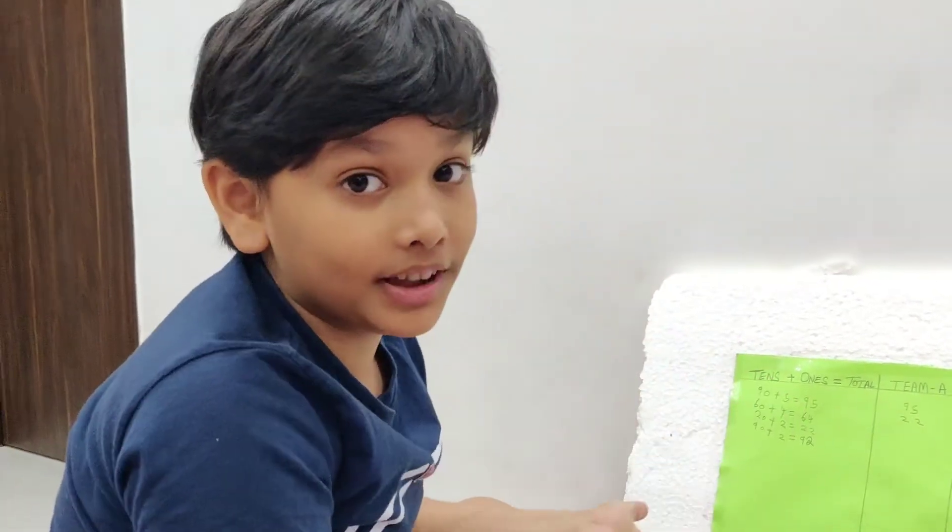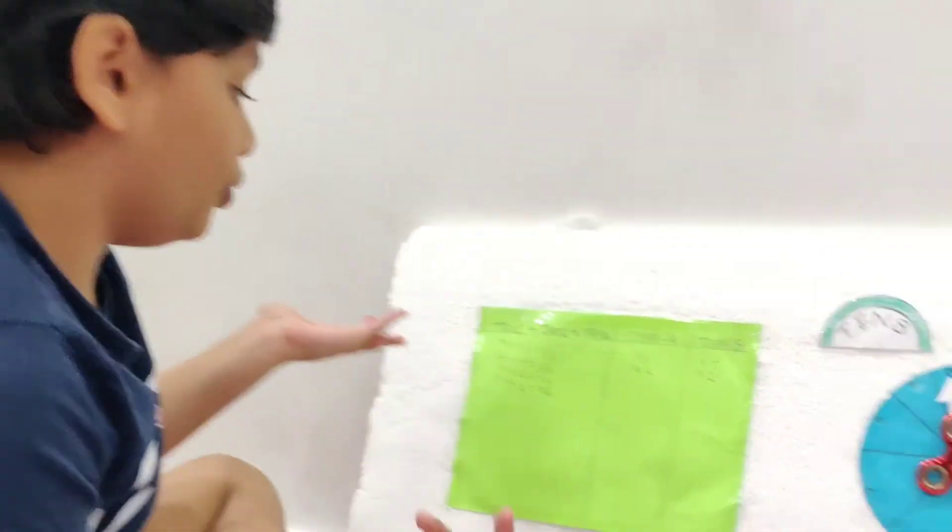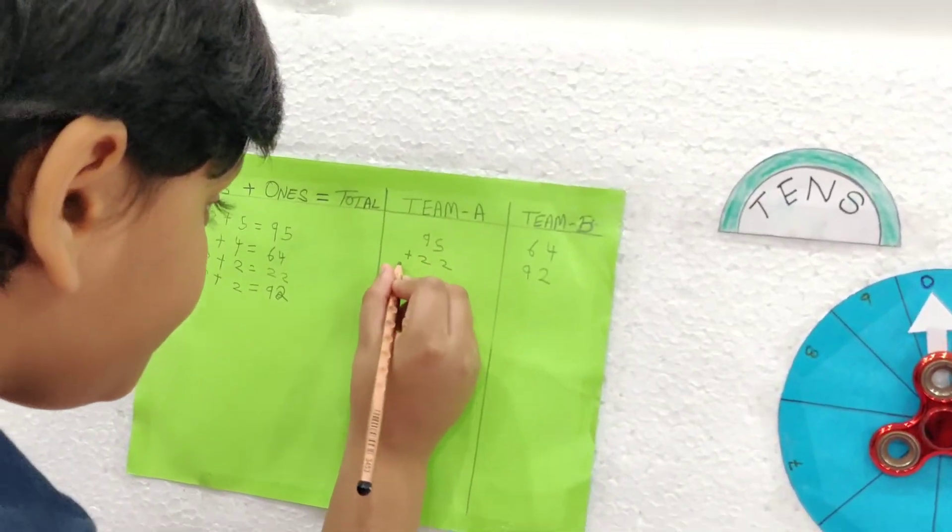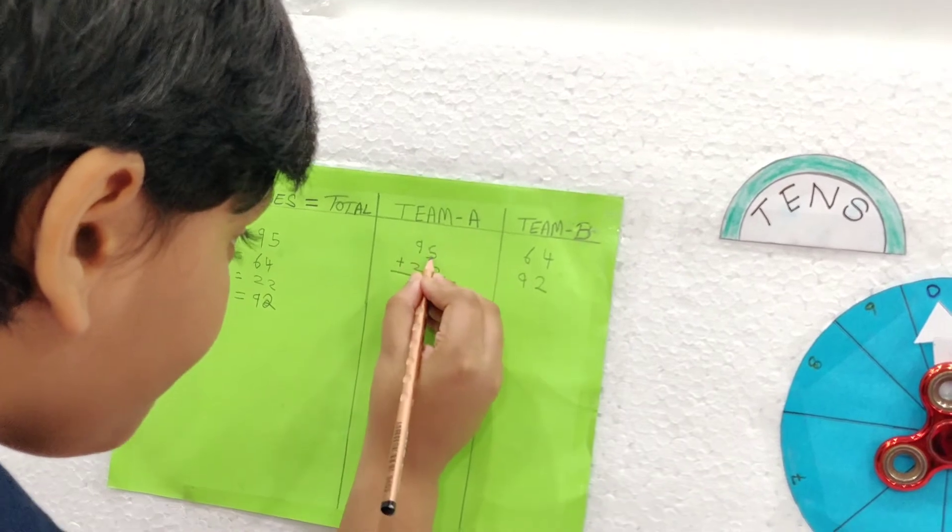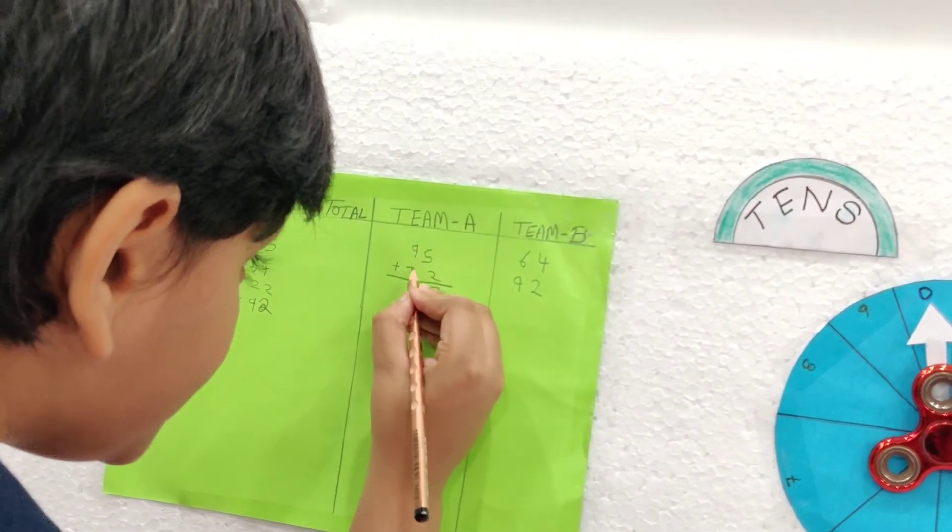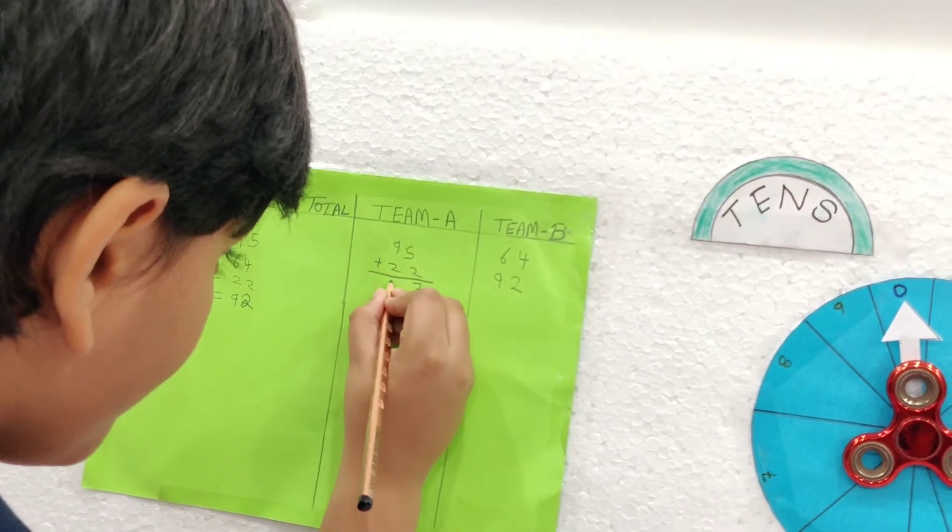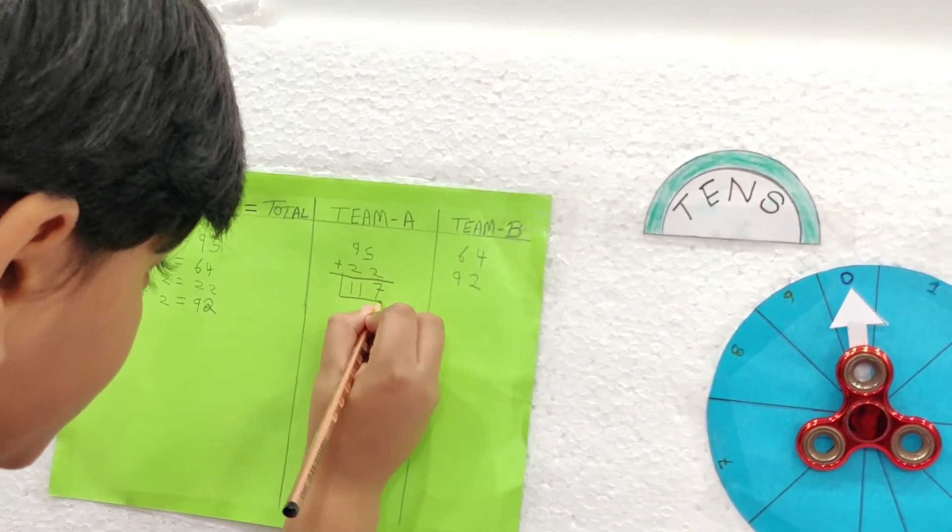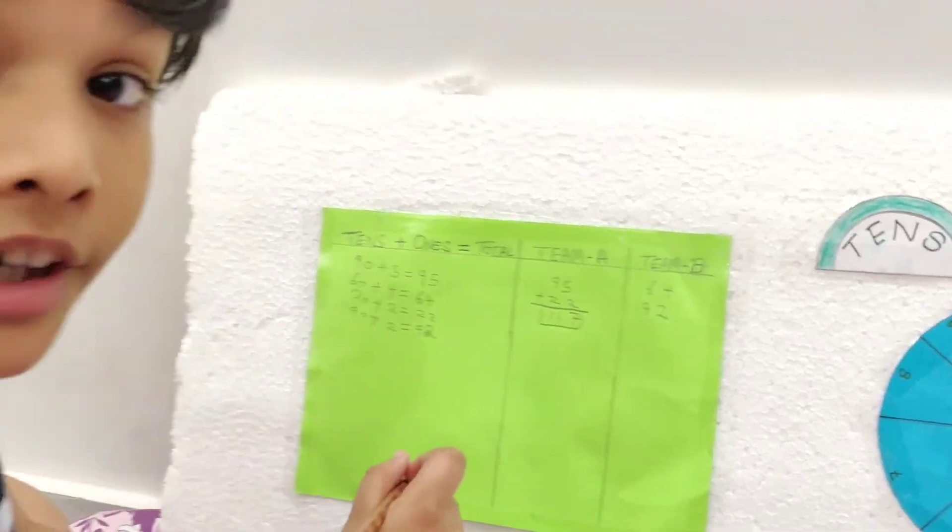Now let us add the numbers and we will see who will win. 5 plus 2 plus 2 is 7, and 9 plus 2 is 11. So the number of A team is 117.